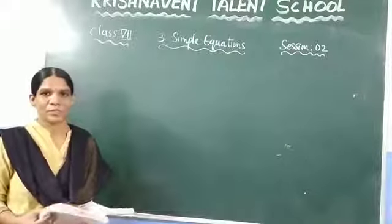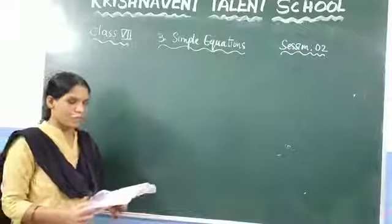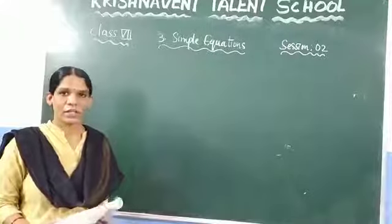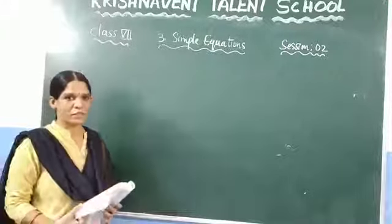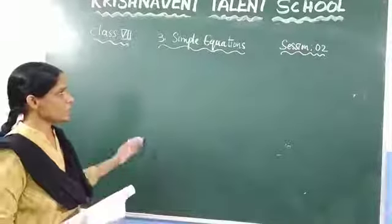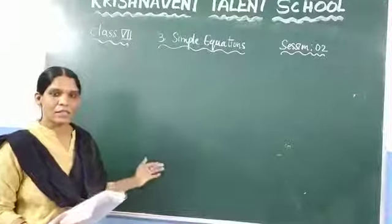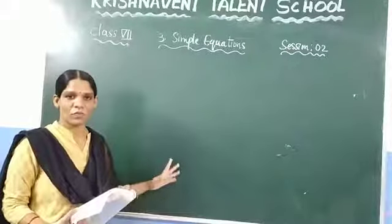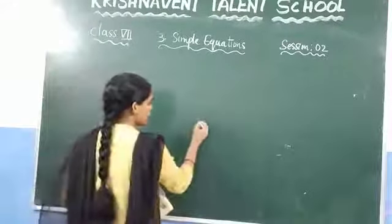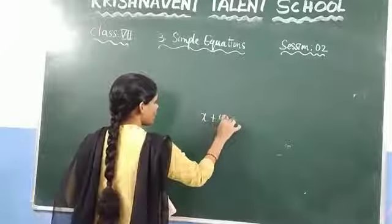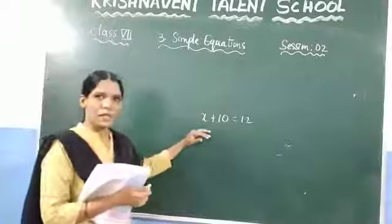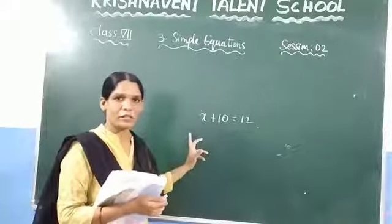We have started the chapter on simple equations. A simple equation is a linear equation which consists of only one variable. For example, x plus 10 is equal to some value. It is a simple equation because it contains only one variable and it is a linear equation since the degree of the variable is 1.